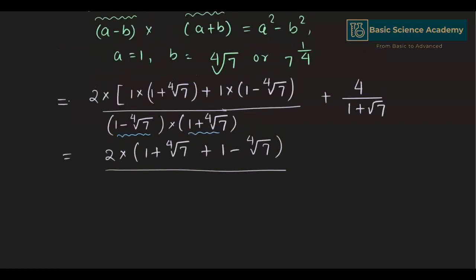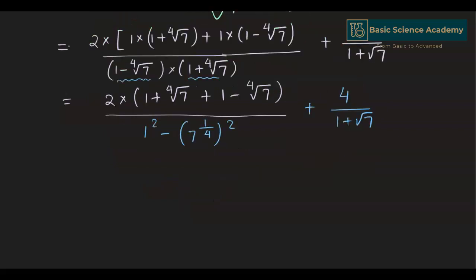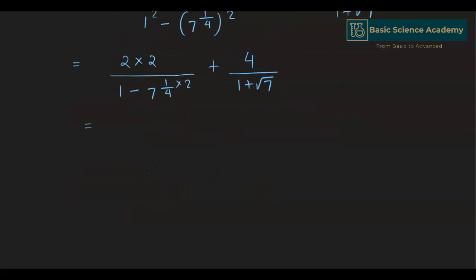Using the formula a squared minus b squared, where a is 1 and b is 4th root of 7: a squared is 1 squared and b squared is 7 to the power of 1/4 squared. The 4th root of 7 and minus 4th root of 7 cancel out to give 2 multiplied by 2, which is 4, divided by 1 minus 7 to the power of 1/4 times 2. The 2 and 4 cancel to give 1/2, and 7 to the power of 1/2 is square root of 7, so we have 4 divided by 1 minus square root of 7, plus 4 divided by 1 plus square root of 7.